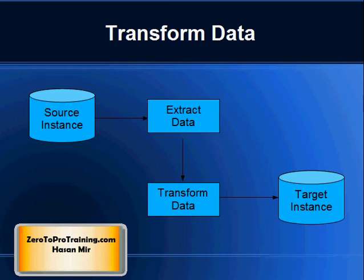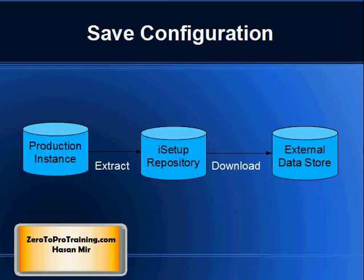Here is the Save Data Scenario. Extract the data from an instance using Oracle iSetup. The extracted data is stored in the Oracle iSetup repository. You can download this data and save it in an external repository, which will serve as a backup.